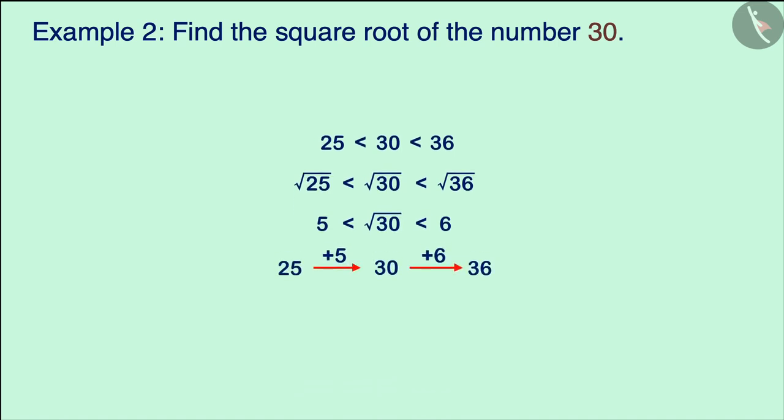Here we observe that 30 is closer to the number 25 than the number 36, which we can verify by the difference, i.e., the square root of 30 is closer to the whole number 5.